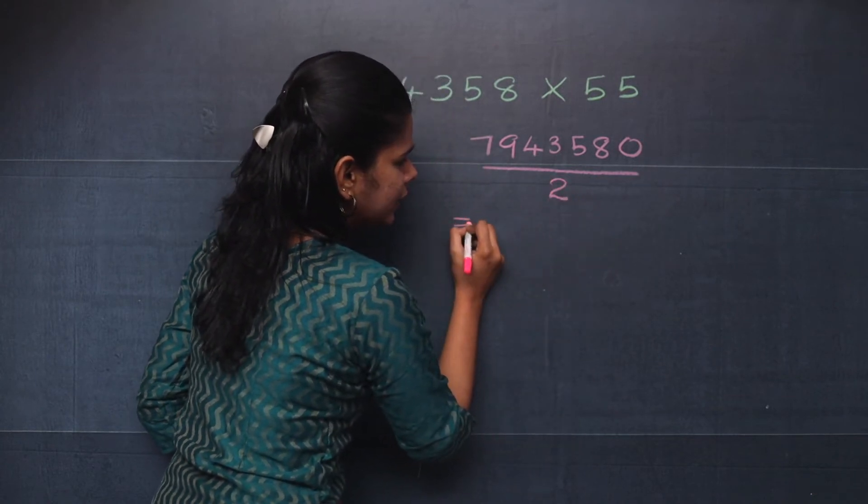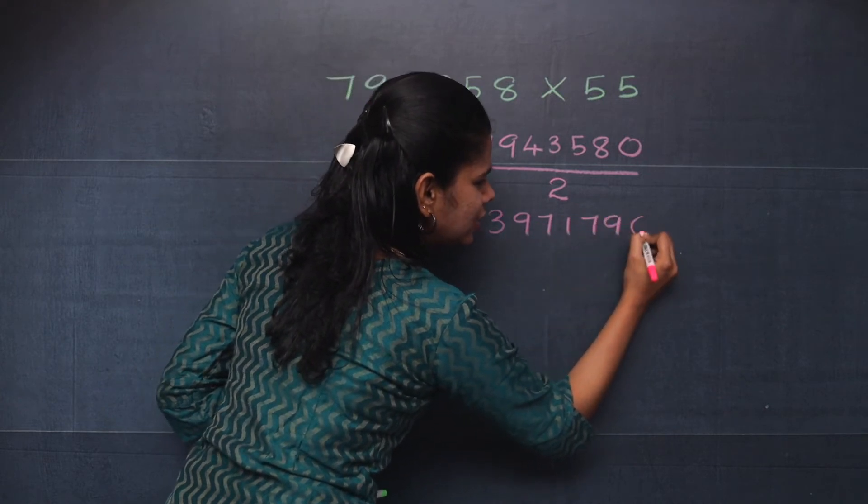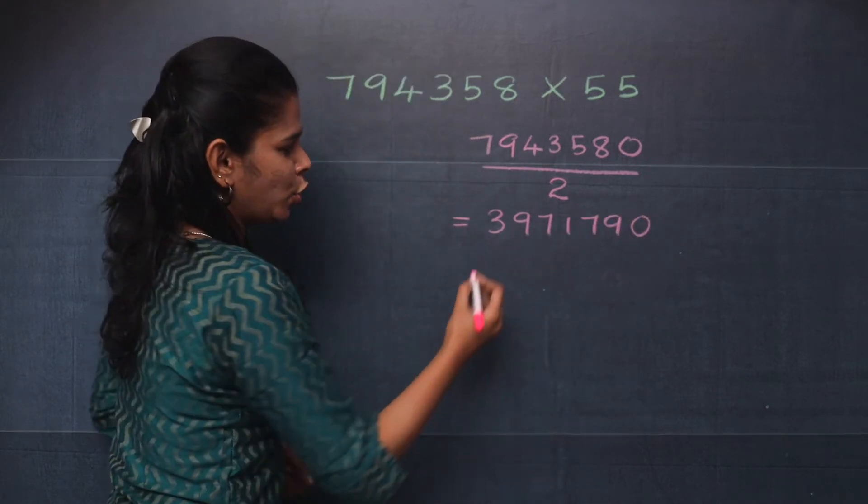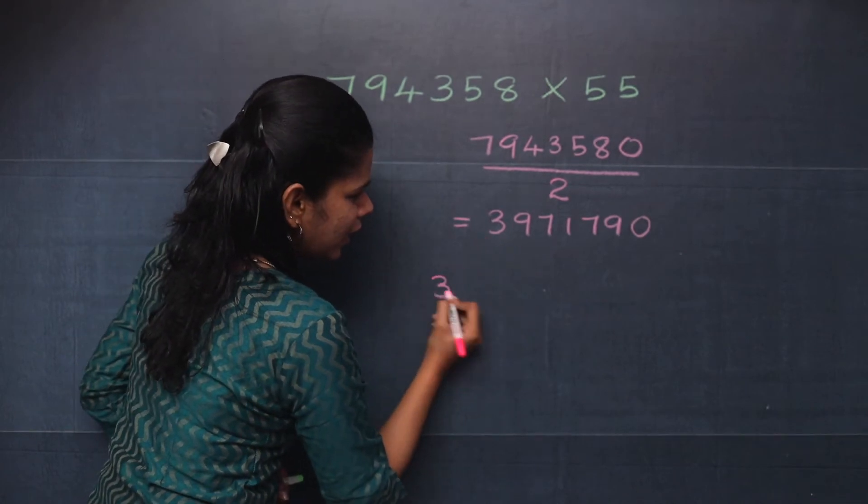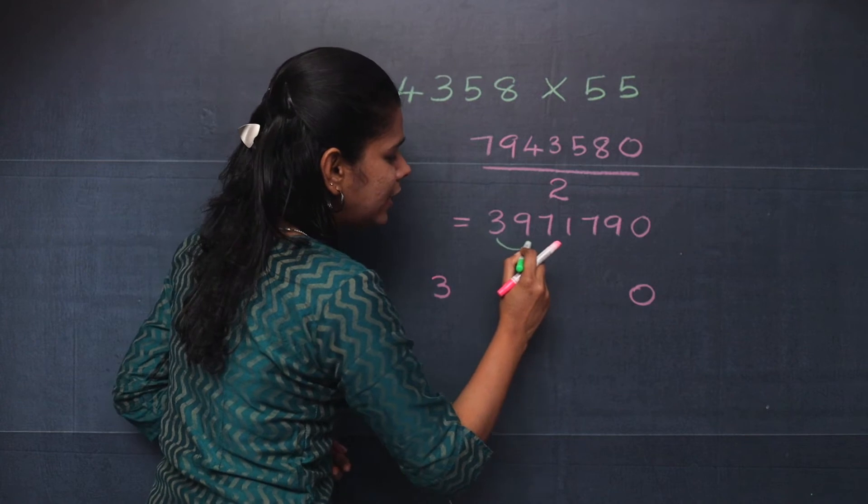And you will get 3, 9, 7, 1, 7, 9, 0. Now you will write 3 here and 0 here. Now you will add 3 and 9.